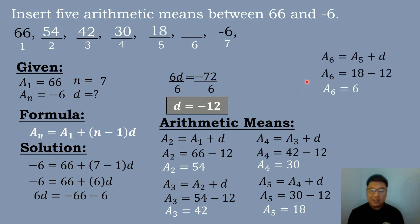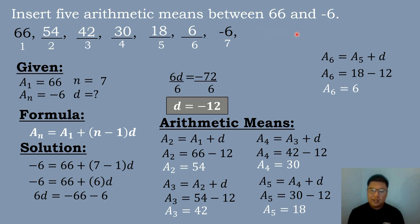And for the last one, the sixth term: add the fifth term plus the common difference, 18 plus negative 12, which equals 6. So the five arithmetic means between 66 and negative 6 are: 54, 42, 30, 18, and 6.